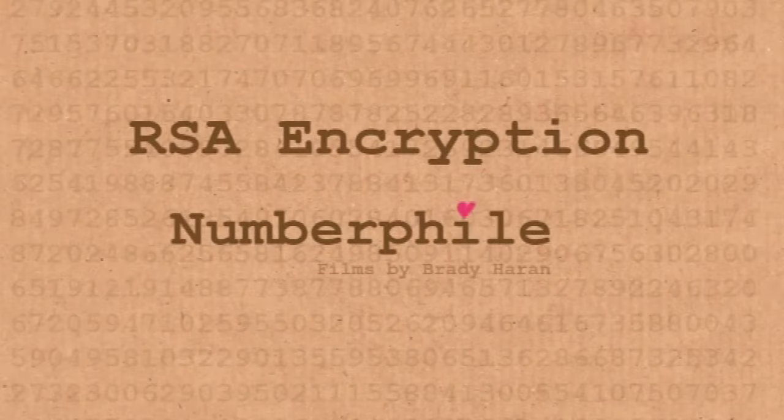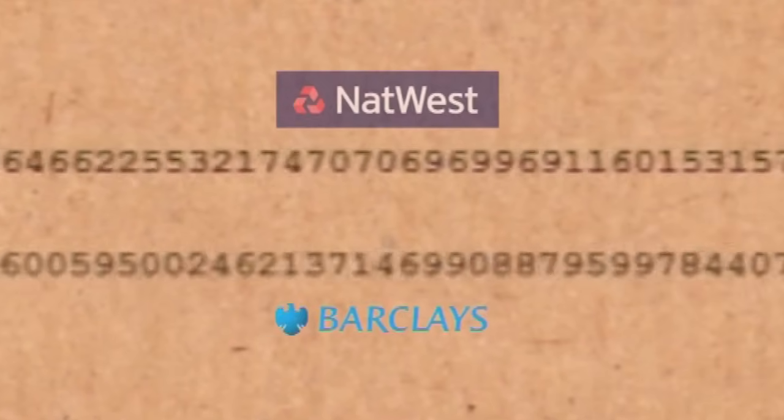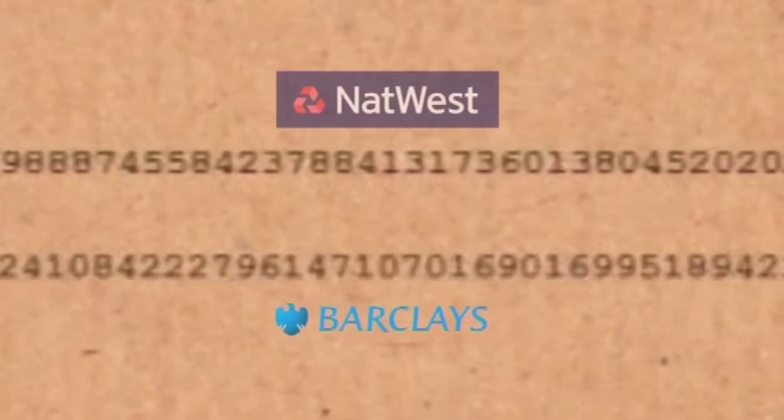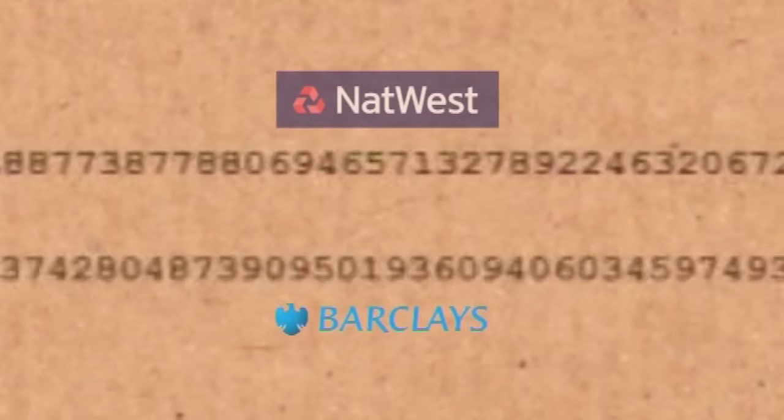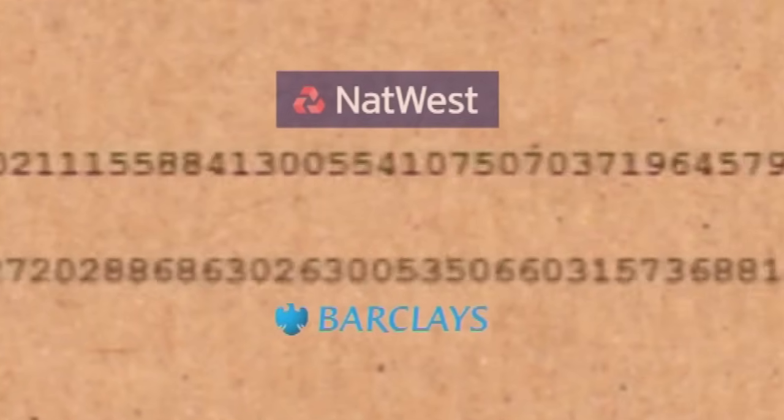So this number that we are reading out is 617 digits long. All banks have similar numbers when you want to send them your credit card details. This is not a secret number. In fact, your computer will download this number when it wants to send your credit card details. It's there to find. This is public.